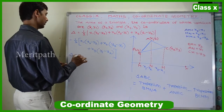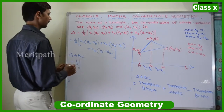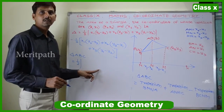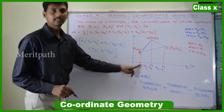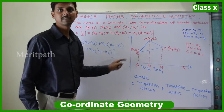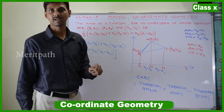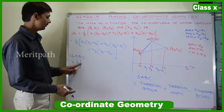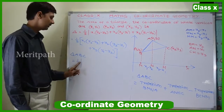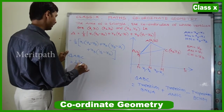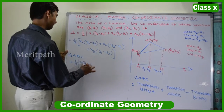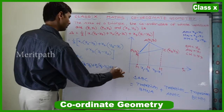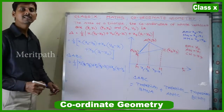Therefore, area of triangle ABC equals half into modulus of x1(y2 minus y3) plus x2(y3 minus y1) plus x3(y1 minus y2). The modulus is used because area is always a positive value — if the computed value is negative, we take it as positive. This is the formula for the area of a triangle given its three vertices in coordinate geometry.